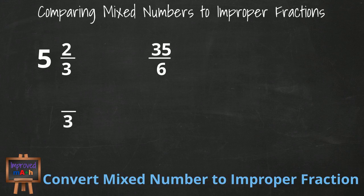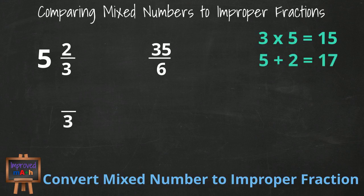We then multiply 3 times our whole number of 5 for a total of 15, and then add our numerator of 2 to get 17. 17/3 compared to 35/6.